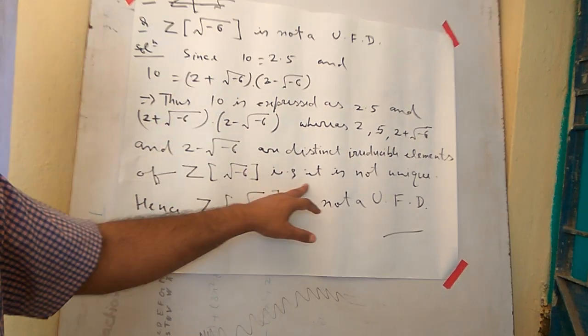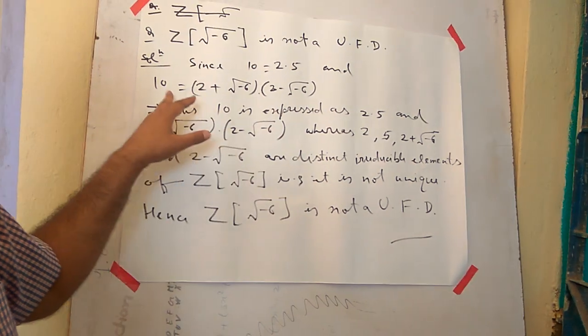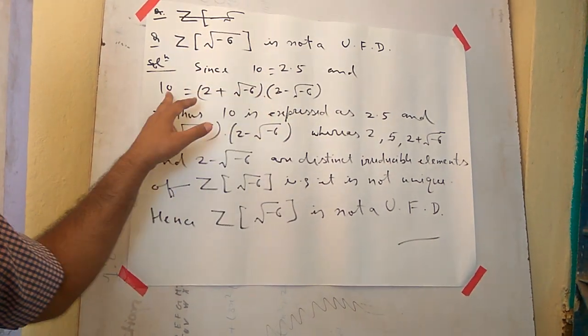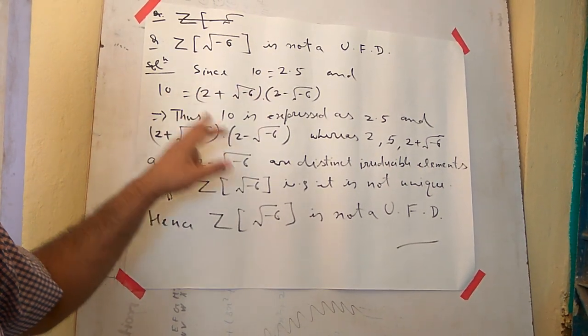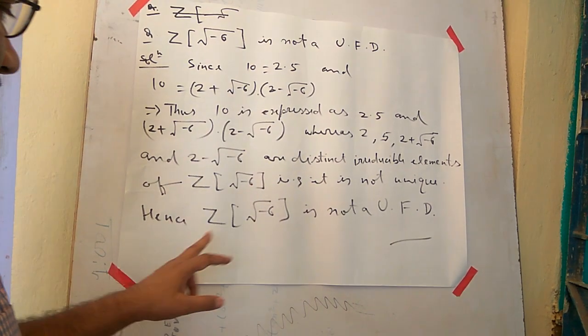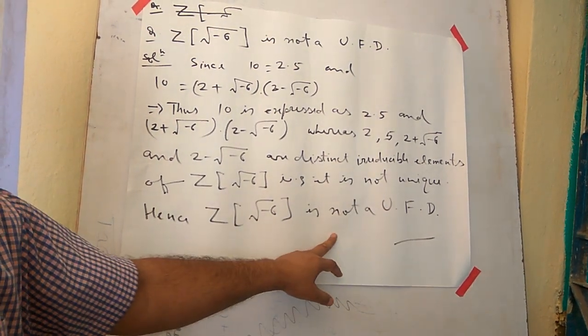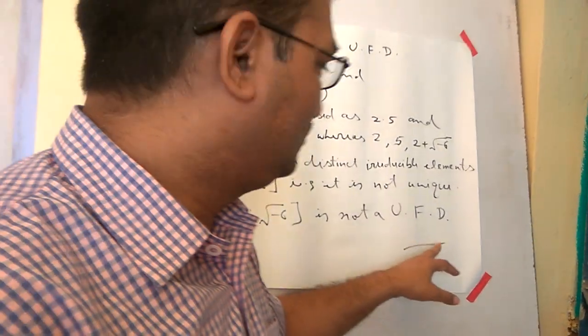Therefore, this 10 is not uniquely represented. That is, we have two different representations of the number 10, though it should be unique for Z[√-6] to be a UFD. Since it is not unique, hence Z[√-6] is not a unique factorization domain. Thank you.